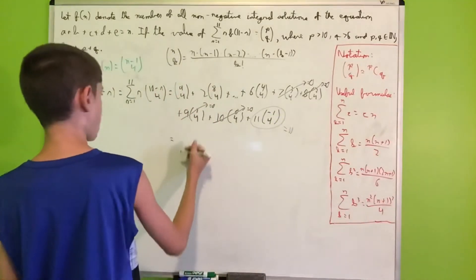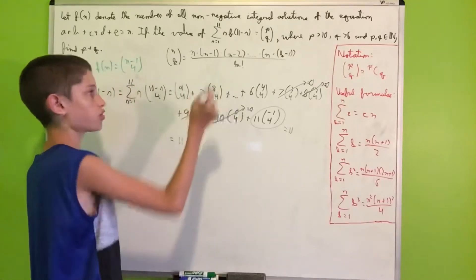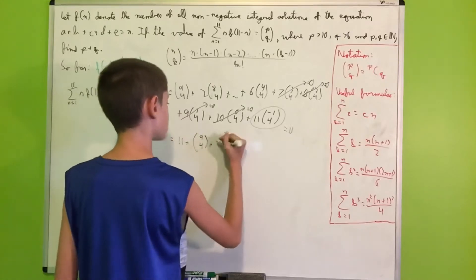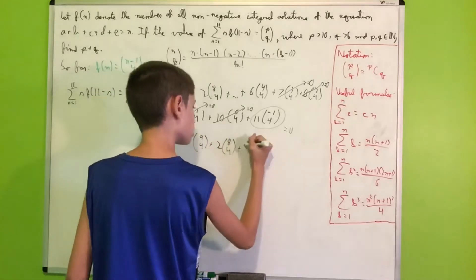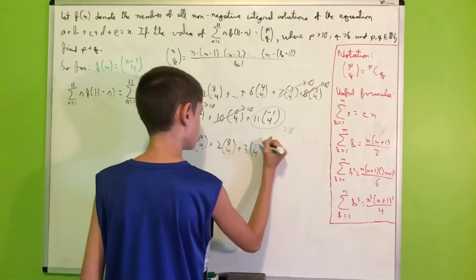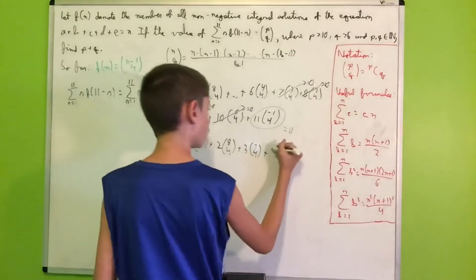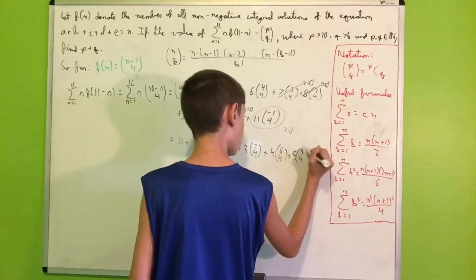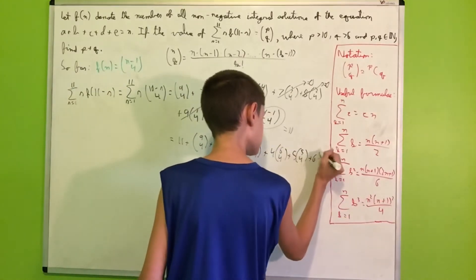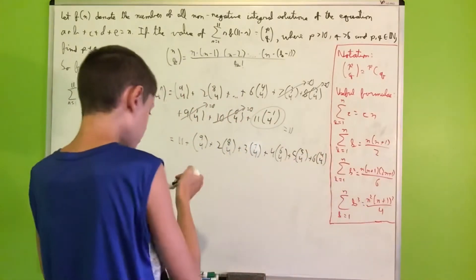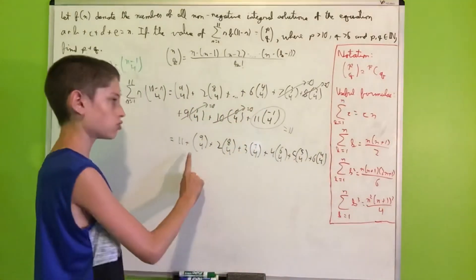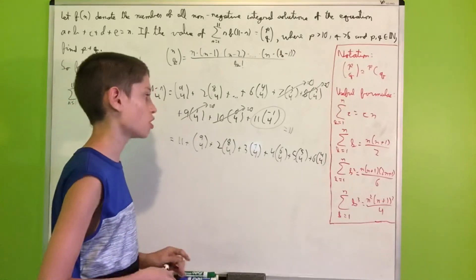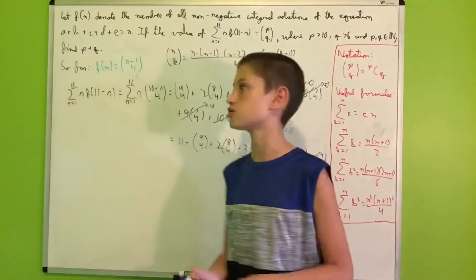So our sum equals 11 plus the non-zero terms: C(9,4) + 2×C(8,4) + 3×C(7,4) + 4×C(6,4) + 5×C(5,4) + 6×C(4,4). Now I'd like to use Pascal's triangle to calculate these binomial coefficients.